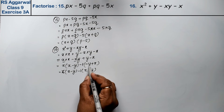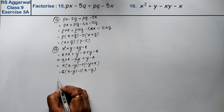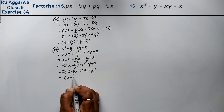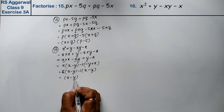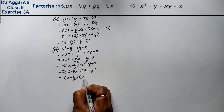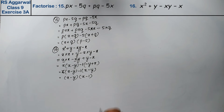So x minus y is common. Taking x minus y common, what is left inside is x minus 1. So the answer is x minus y into x minus 1.